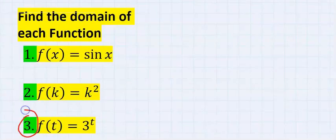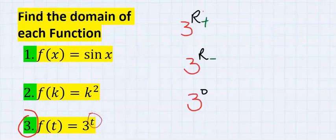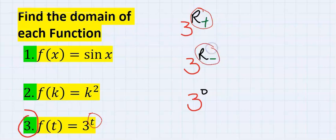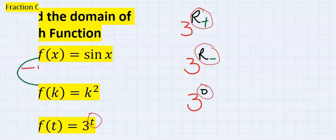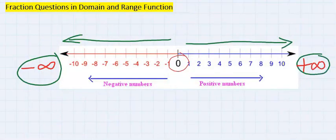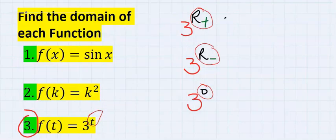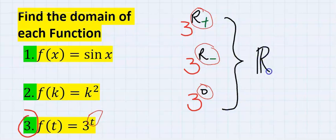For number three, t can take all positive real numbers and equally can take all negative real numbers including zero. Hence all the numbers found on the number line can come in for t. All numbers can come in for t.